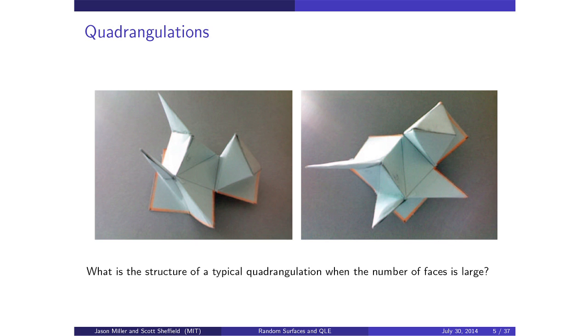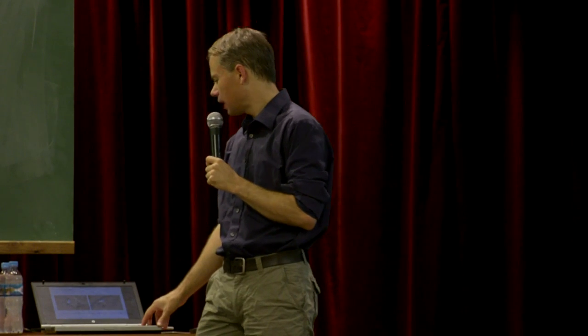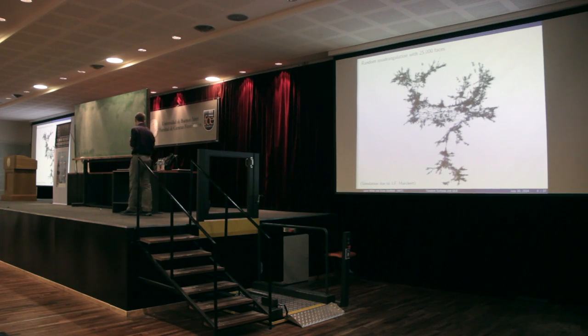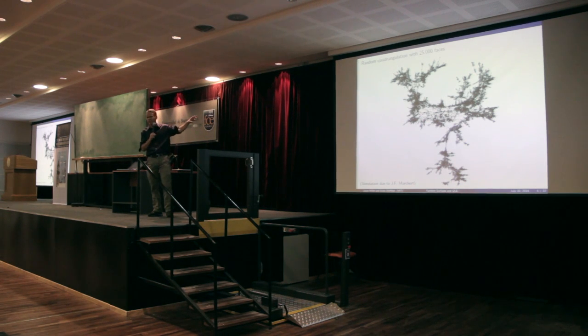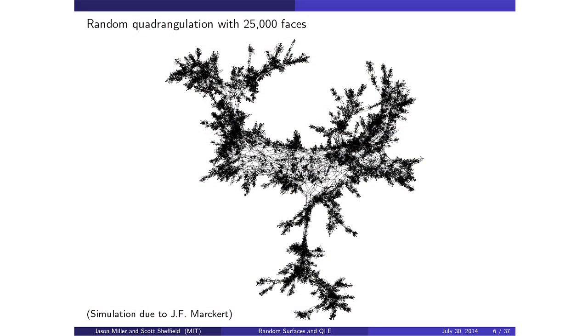Here's an example of an actual surface made out of paper — cut out and glued together using triangles. You might ask what this looks like if you do it randomly with a large number of squares or triangles. Here is a simulation done by Marquet, where he chose uniformly at random one of these quadrangulations, then used some software to embed the graph in three dimensions and project it onto two dimensions. You can see lots of narrow tentacles and a weird fractal structure.